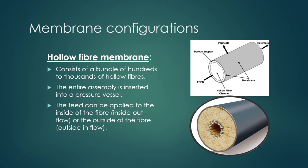Hollow fiber membrane modules consist of bundles of hundreds to thousands of hollow fibers inserted into a pressure vessel. Feed can be applied to the inside of the fiber (inside-out flow) or the outside of the fiber (outside-in flow), allowing the feed to pass through the membrane in either direction.